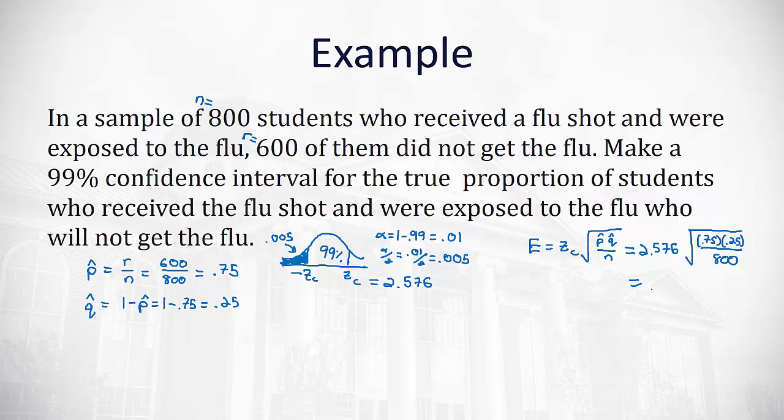2.576 times the square root of 0.75 times 0.25 divided by 800, making sure all that is underneath the square root. Don't close the square root too soon. So that is our error of 0.039 at 99% confidence that our proportion is off from the population proportion.